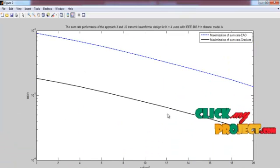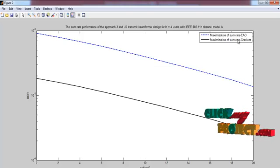is the BER response for the maximization of sum rate EAO and also the maximization of sum rate using gradient approach. Here,